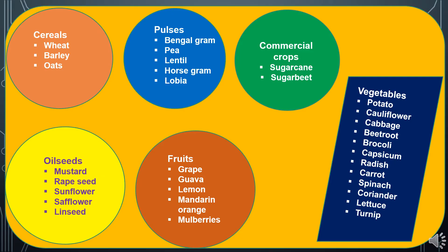Rabi season crops by category: under cereals — wheat, barley and oats; under pulses — Bengal gram, pea, lentil, horse gram and lobia; as a commercial crop — sugarcane; under oilseeds — mustard and rapeseed as major crops, with sunflower, safflower and linseed as others. Fruits grown in cool winter climates include grape, guava, lemon, mandarin orange and mulberries. Vegetables most suitable for this season include potato, cauliflower, cabbage, beetroot, broccoli, capsicum, radish, carrot, spinach, coriander, lettuce and leafy crops.